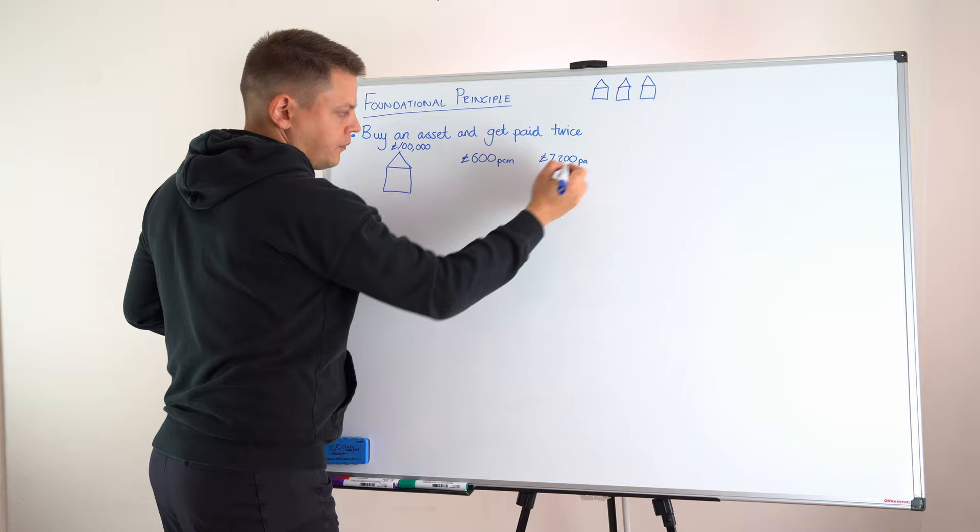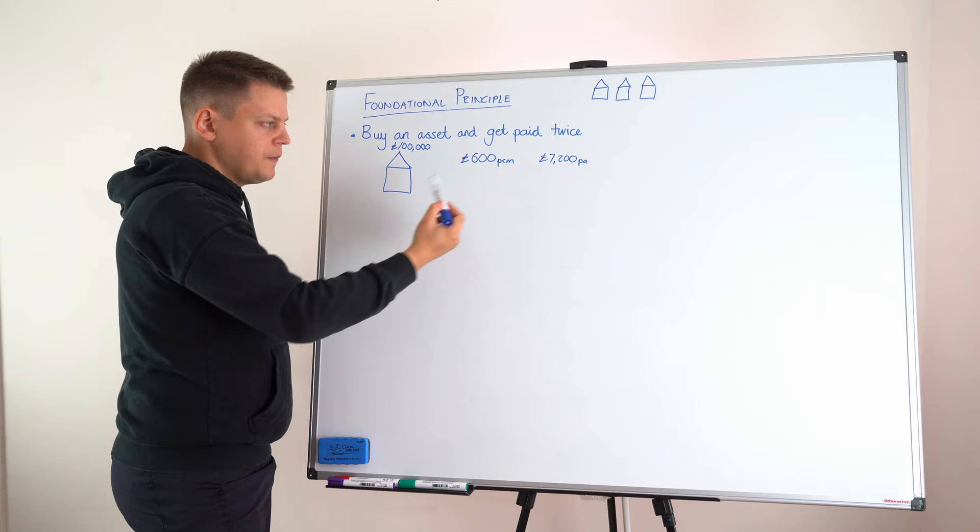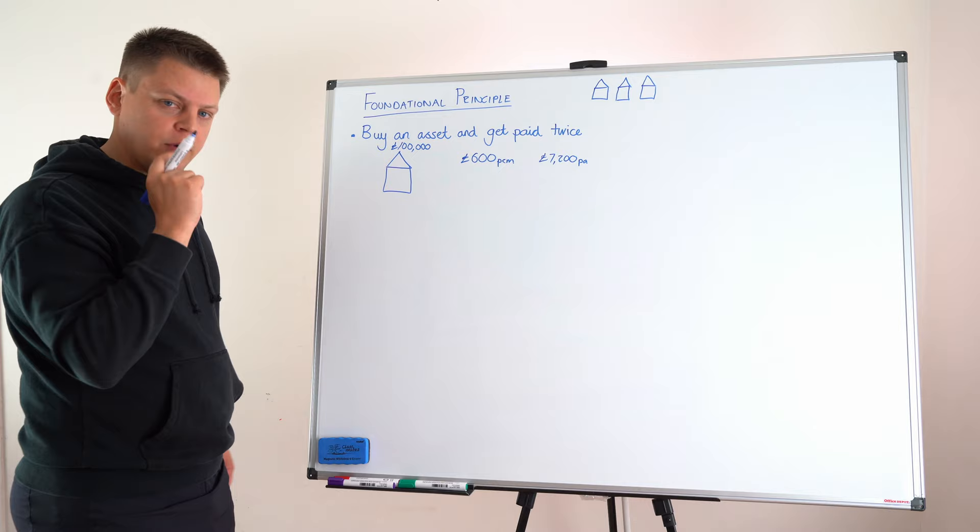So, so far, let's go back to this foundational statement. We're going to buy an asset and get paid twice. We have bought an asset for £100,000. And we have now been paid every month for a year and have received £7,200. Well, that's just paid once, right? You're absolutely right.